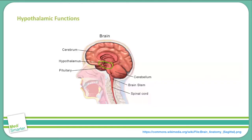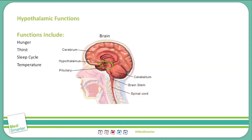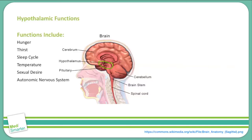There are a number of key functions that the hypothalamus performs that you should be aware of. These functions include hunger, thirst, the sleep cycle, body temperature, sex drive, and regulation of the autonomic nervous system — that is, it regulates both the sympathetic and parasympathetic nervous systems. In addition to regulating homeostasis and bodily functions, the hypothalamus is also an important endocrine organ.